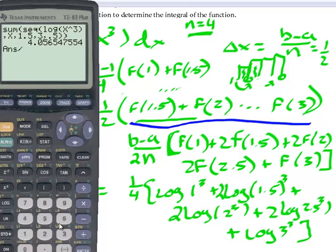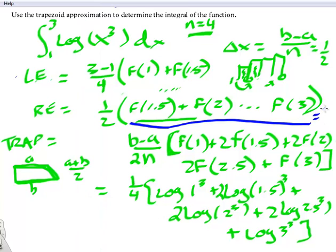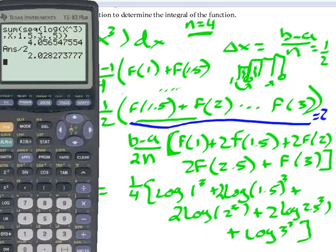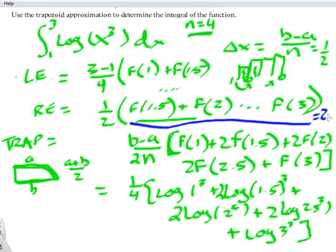So the right end approximation for four rectangles is this answer divided by, excuse me, divided by two, the delta x. So we're multiplying by 0.5, the delta x. So I get an approximation of, my right end approximation is about 2.03. We're just going to round it to 2.03 here. So the area between the function and the x-axis from 1 to 3 is approximately 2.03 by the right end sum.